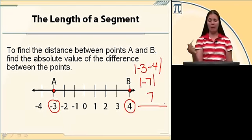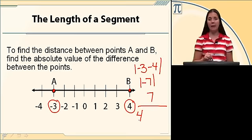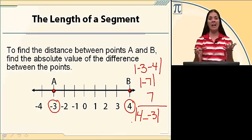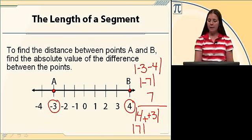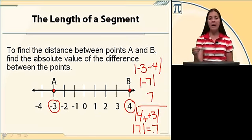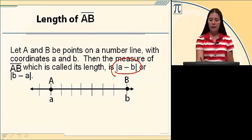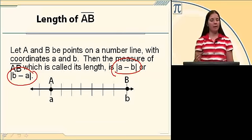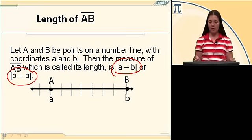Let's say I reversed it. If I put point B first, I get four minus negative three. Put the absolute value there because I want the absolute value of the difference. When I subtract a negative, I'm actually adding. I get the absolute value of seven, which is also seven. So order in this case doesn't matter — I could find the distance from A to B or the distance from B to A. All our formulas, A minus B or B minus A, taking the absolute value of both, give the same result.